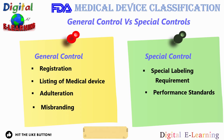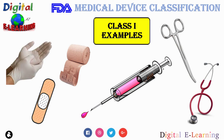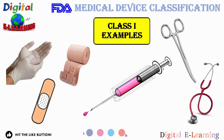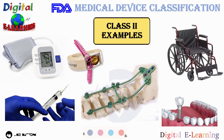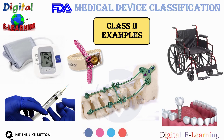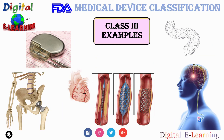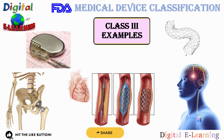Let us look at some examples by class. Class 1 examples include tongue depressors, bandages, gloves, simple surgical devices, and stethoscopes. Class 2 device examples include wheelchairs, X-ray machines, MRI machines, surgical needles, catheters, diagnostic equipment, spinal implants, and dental implants. Class 3 devices, which are the highest risk, include heart valves, stents, implanted pacemakers, silicone implants, and hip and bone joints.